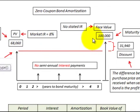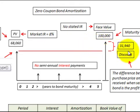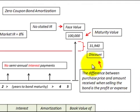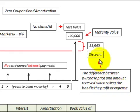Taking the difference between the $100,000 and the $68,060 we get a discounted amount of $31,940. The difference between that purchase price and the amount received when selling the bond is our profit or an expense that we have to allocate on that bond.